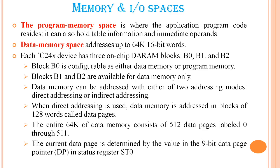Data memory can be addressed with either two addressing modes: direct addressing and indirect addressing. When direct addressing is used, data memory is addressed in blocks of 128 words called data pages. The entire 64K of memory consists of 512 data pages labeled 0 through 511. The current data page is determined by the value in the 9-bit data page pointer, DP.